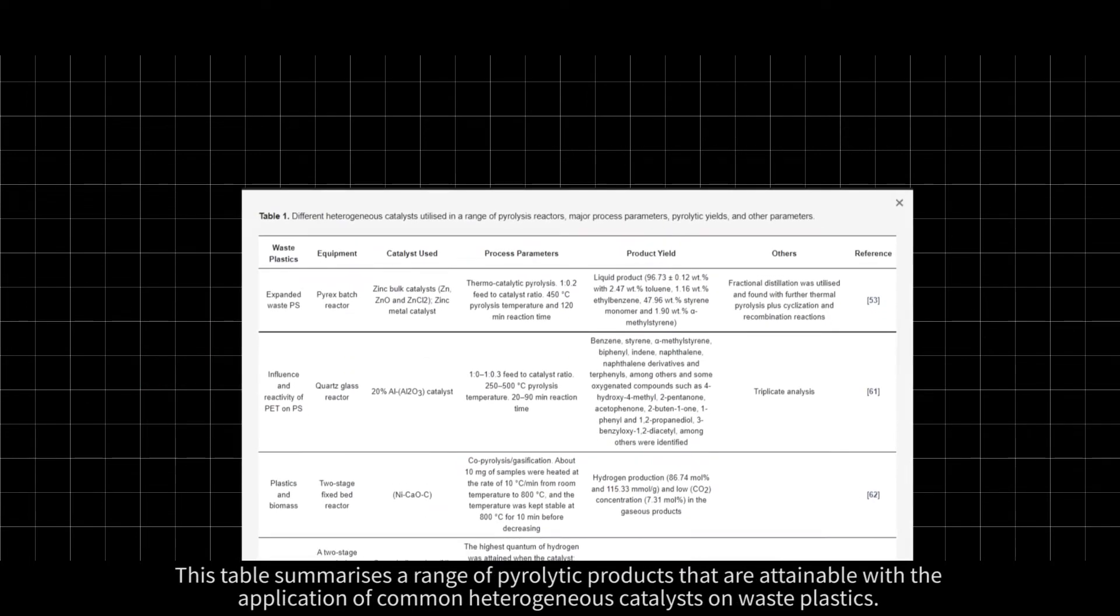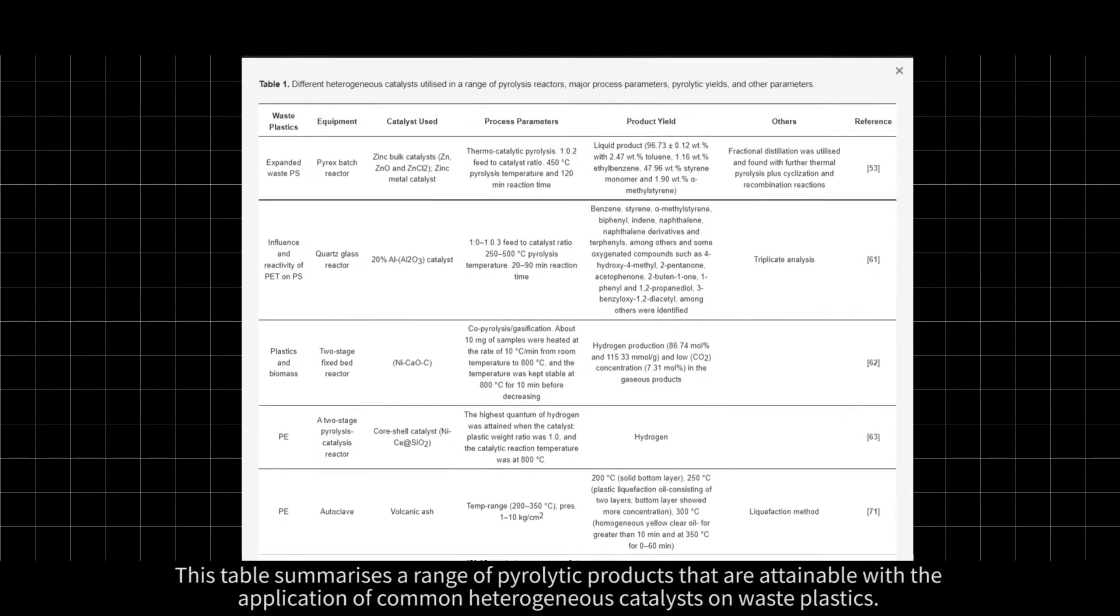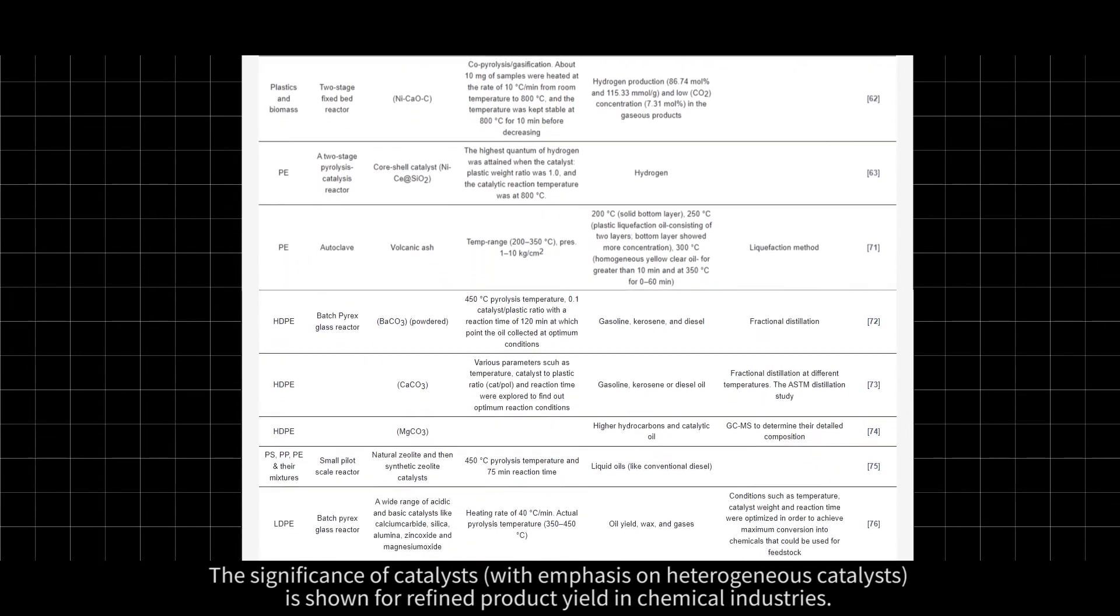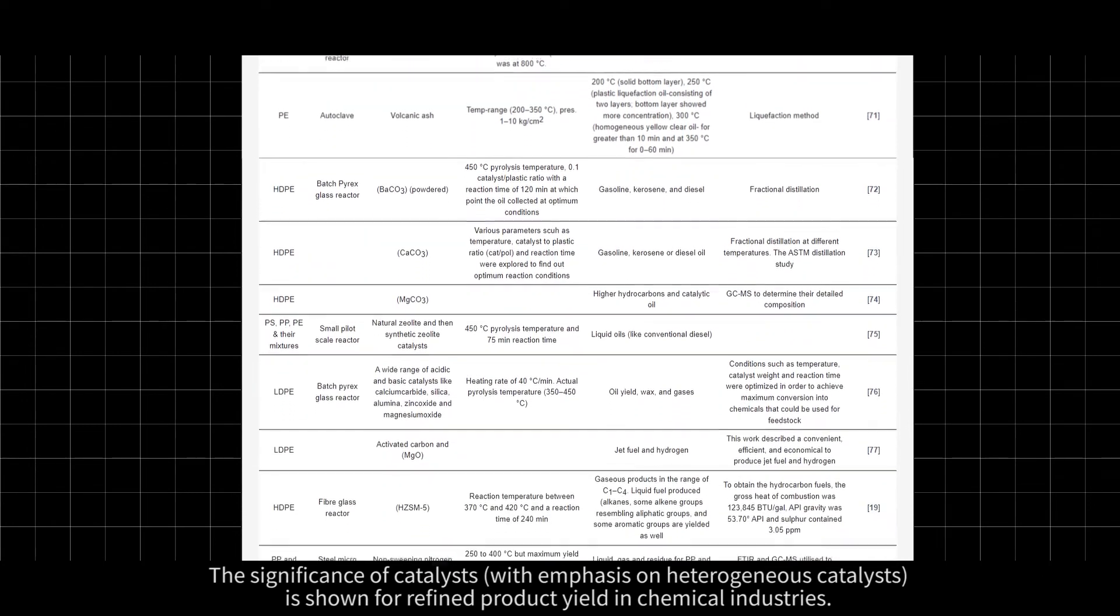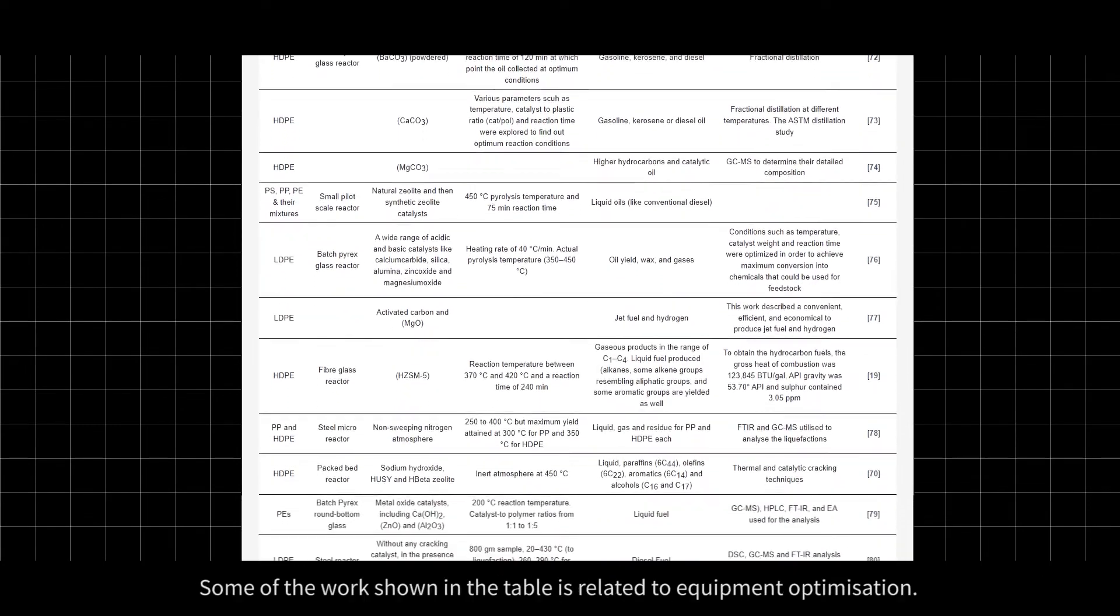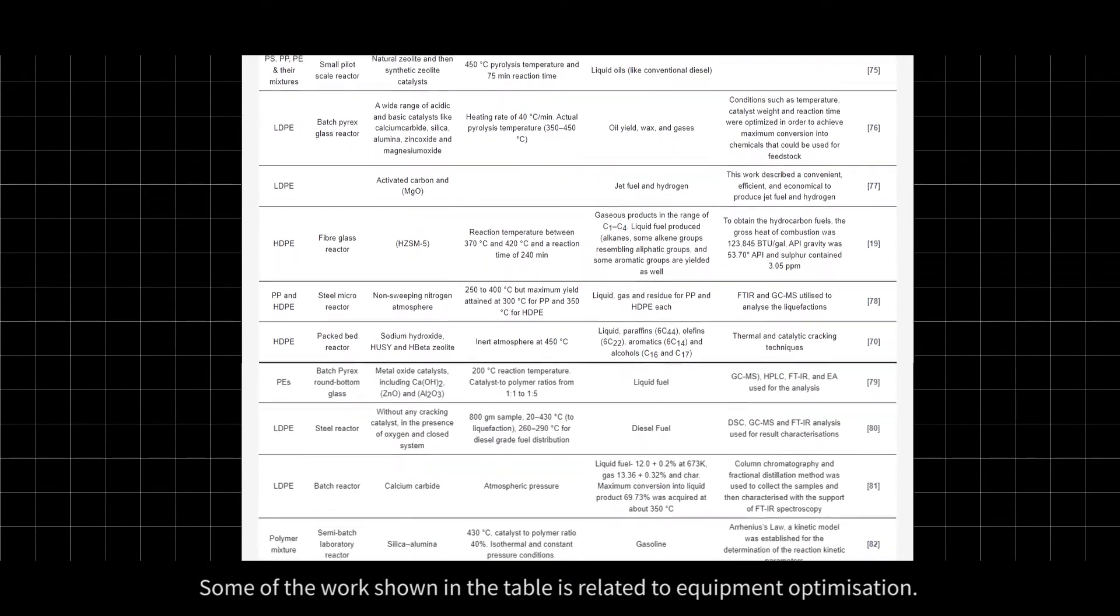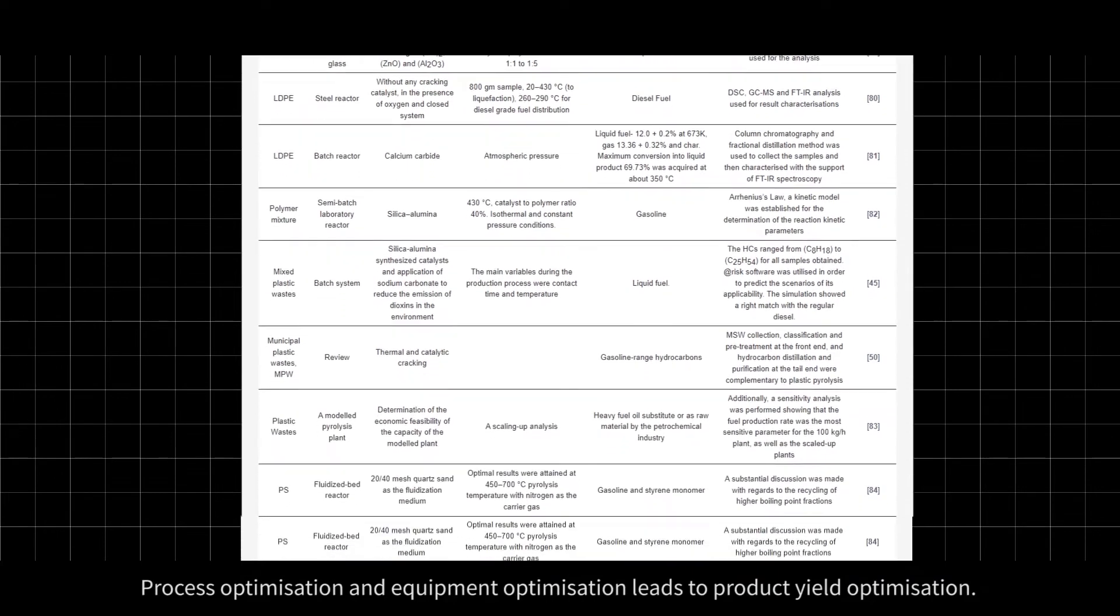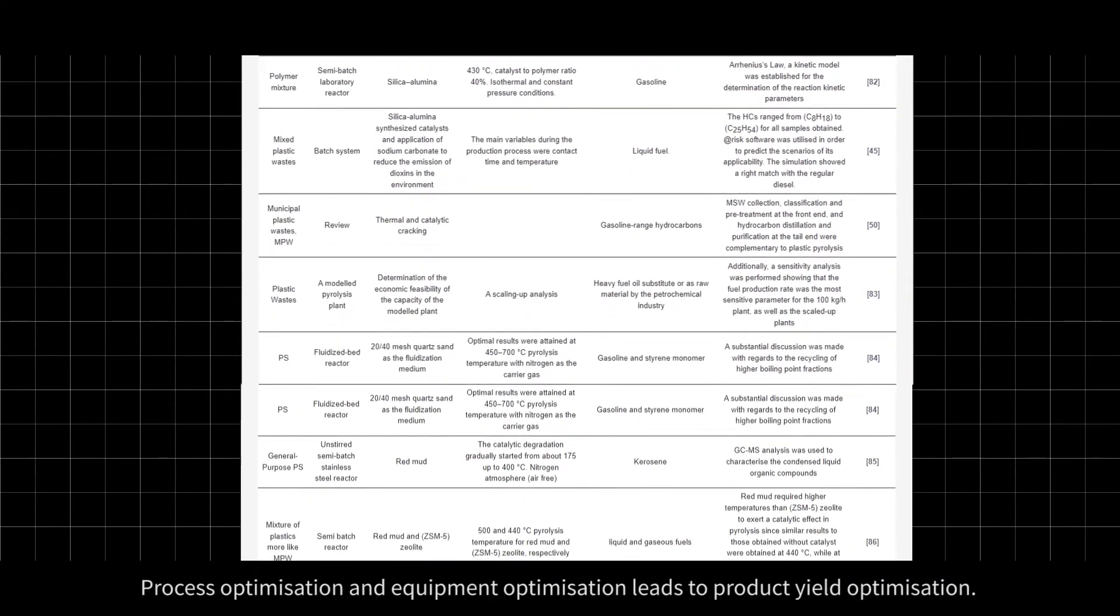This table summarizes a range of pyrolytic products that are attainable with the application of common heterogeneous catalysts on waste plastics. The significance of catalysts is shown for refined product yield in chemical industries. Some of the work shown in the table is related to equipment optimization. Process optimization and equipment optimization leads to product yield optimization.